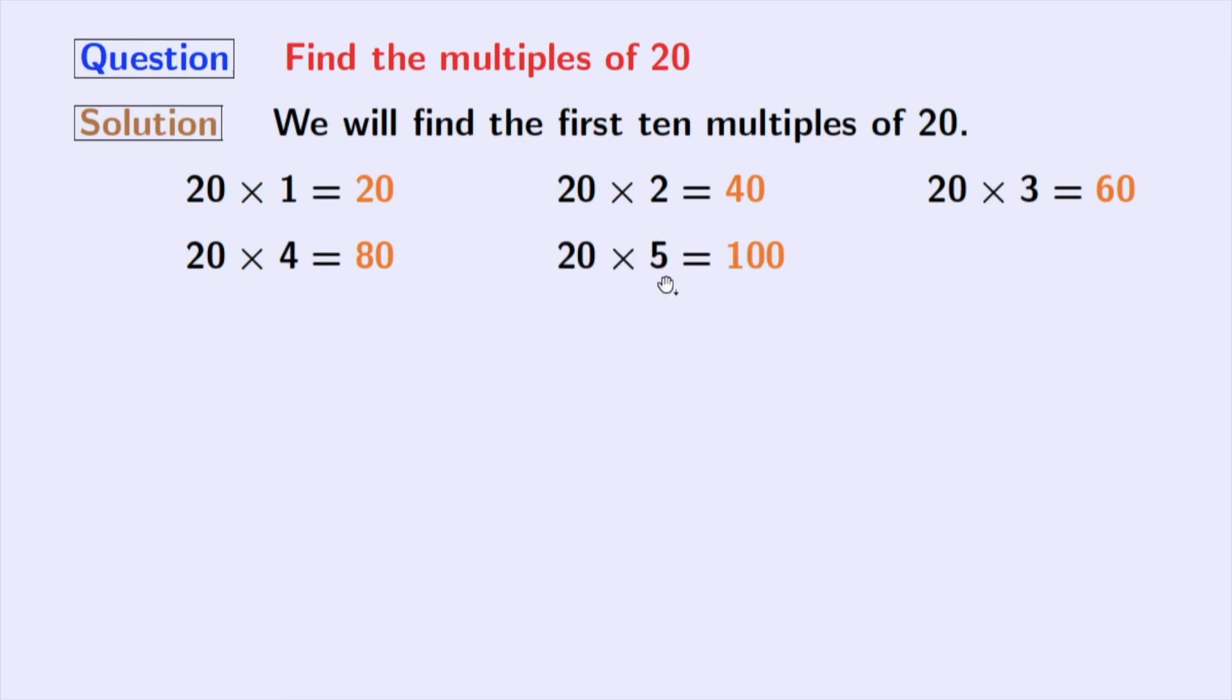20 times 5 gives us 100. 20 times 6 gives us 120. 20 times 7 gives us 140.